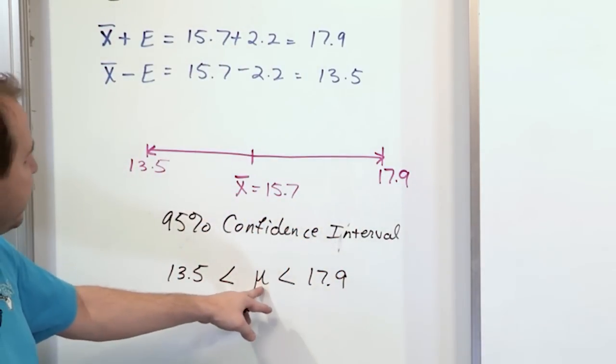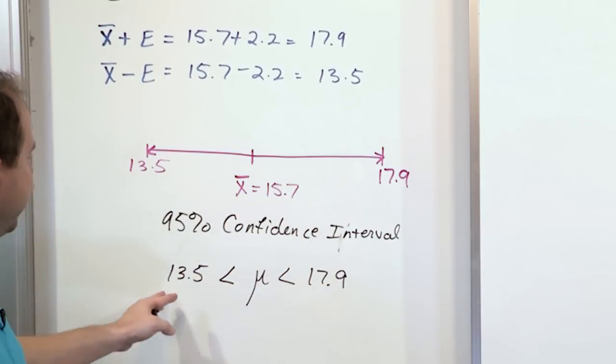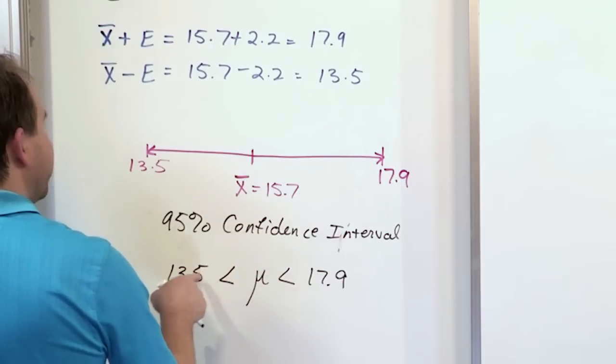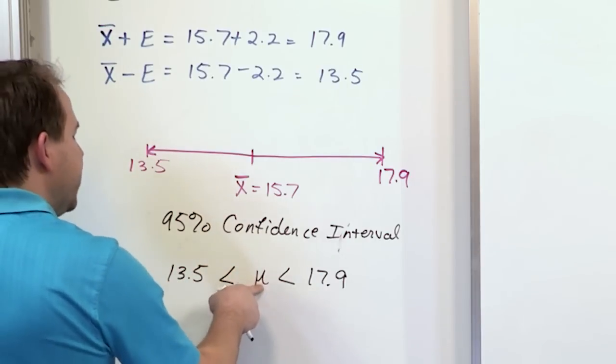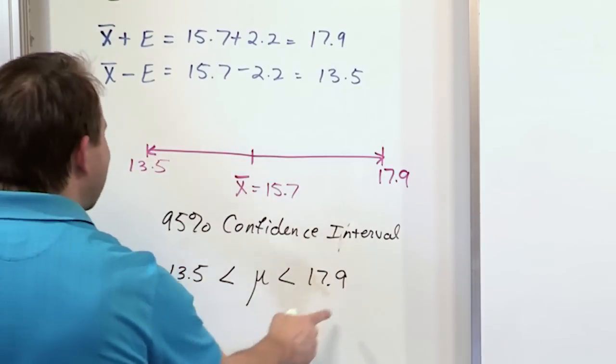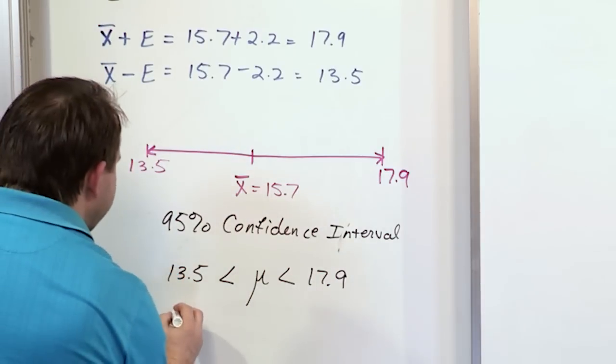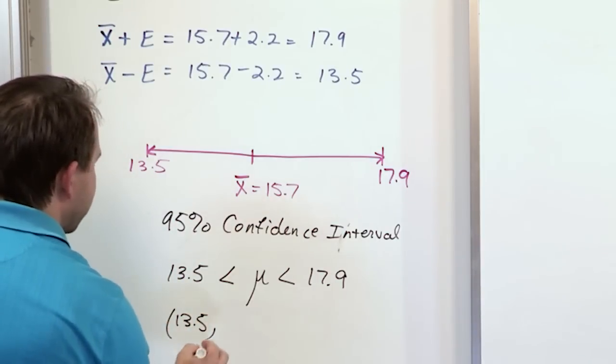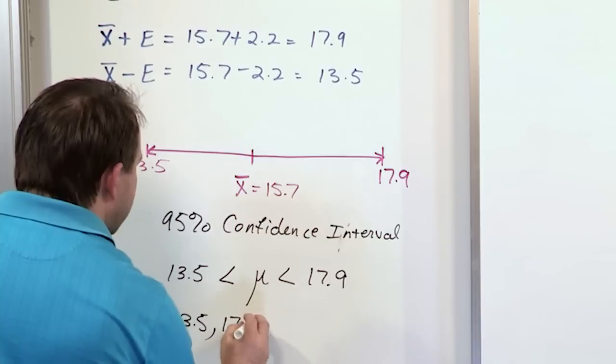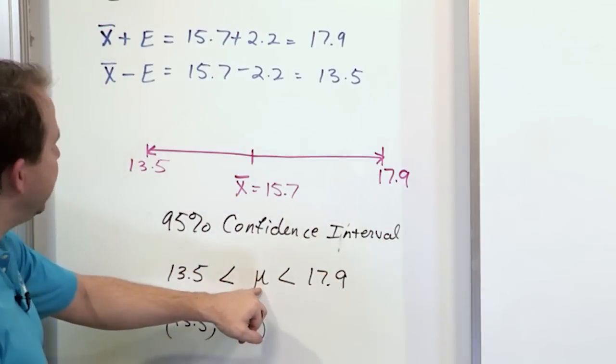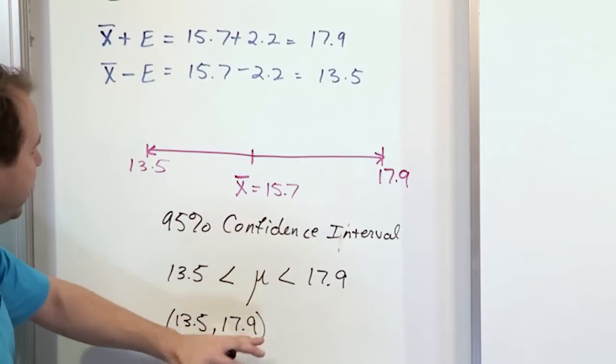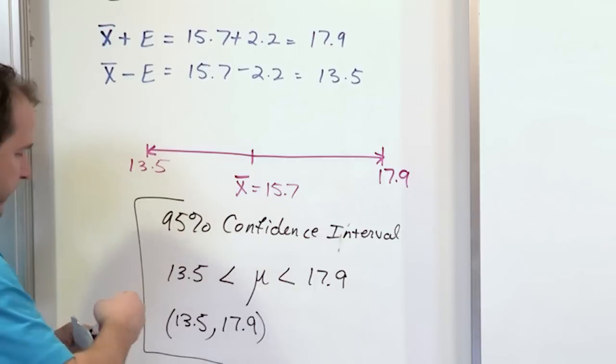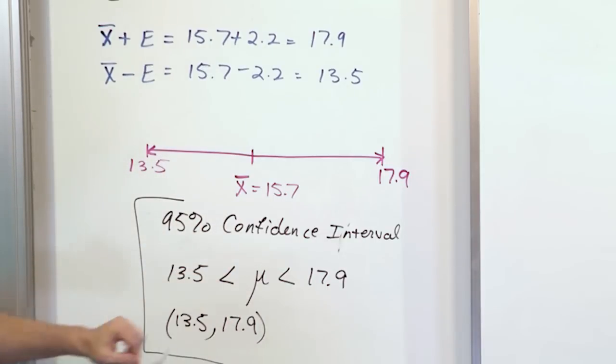We're saying the population mean is going to fall between these limits. You read it from the inside out: the mean is greater than 13.5, the mean is less than 17.9. Another way you could write it in interval notation is just put the lower number, 13.5 comma, then the upper number, 17.9. Either way is perfectly fine. This whole answer is really it.